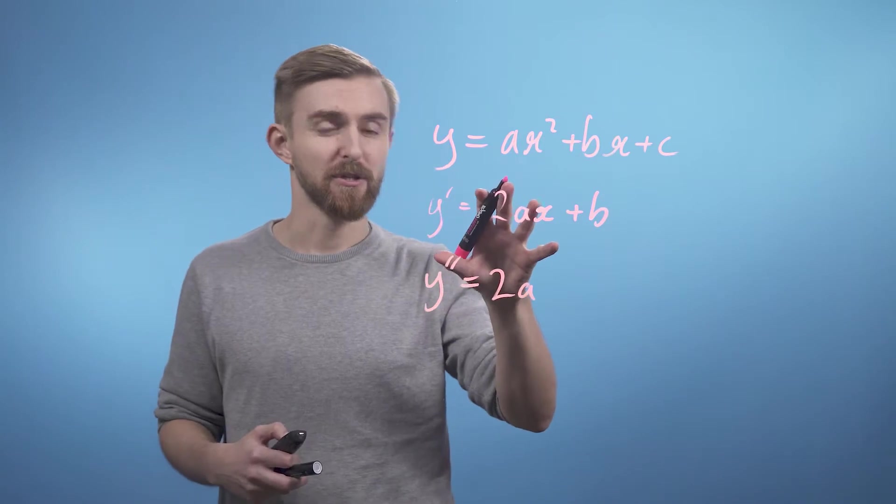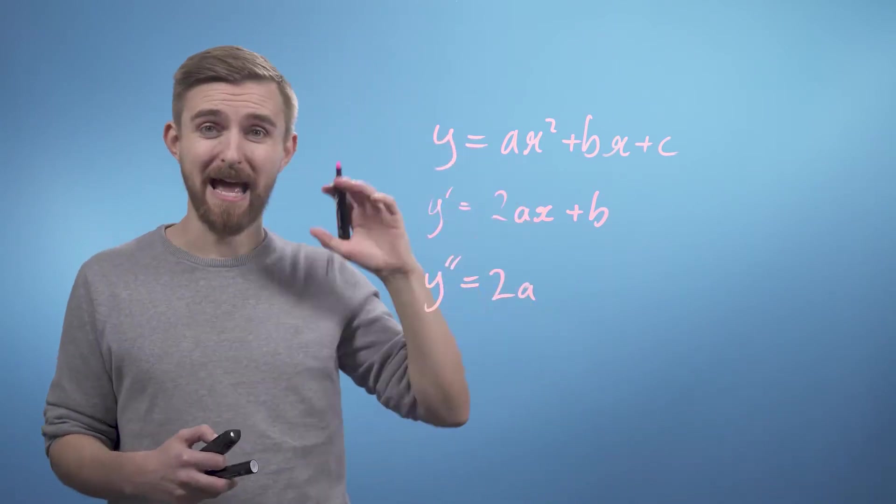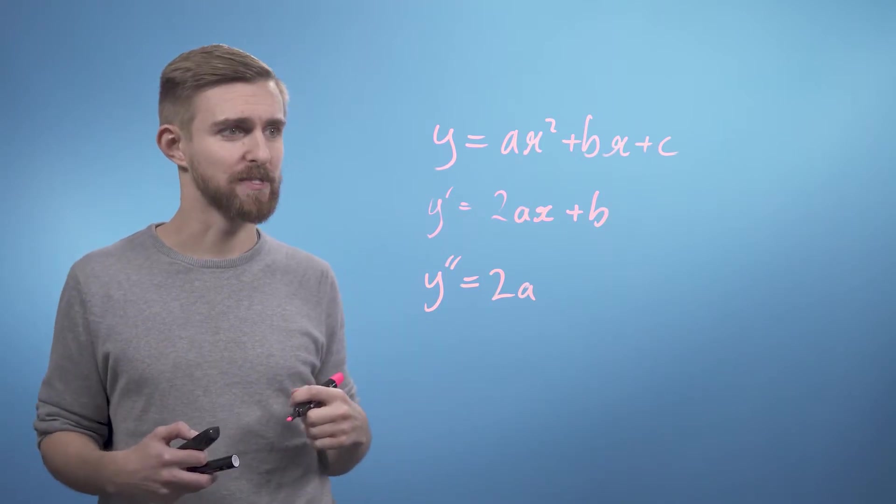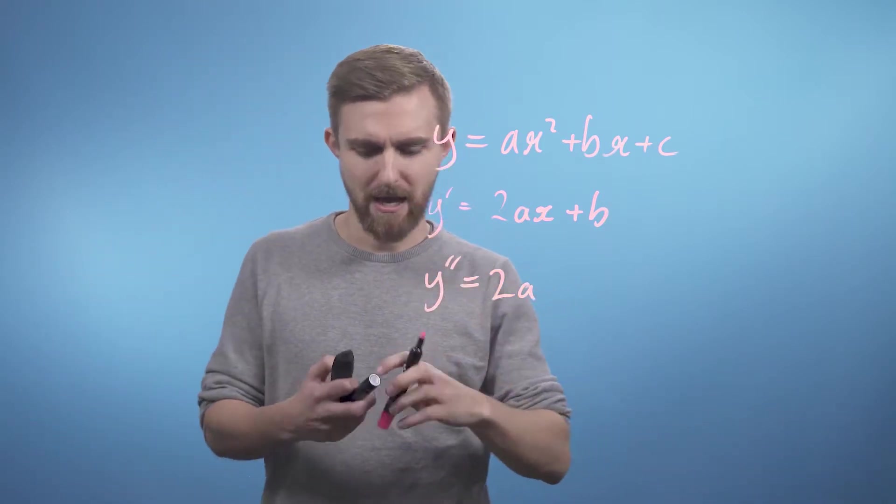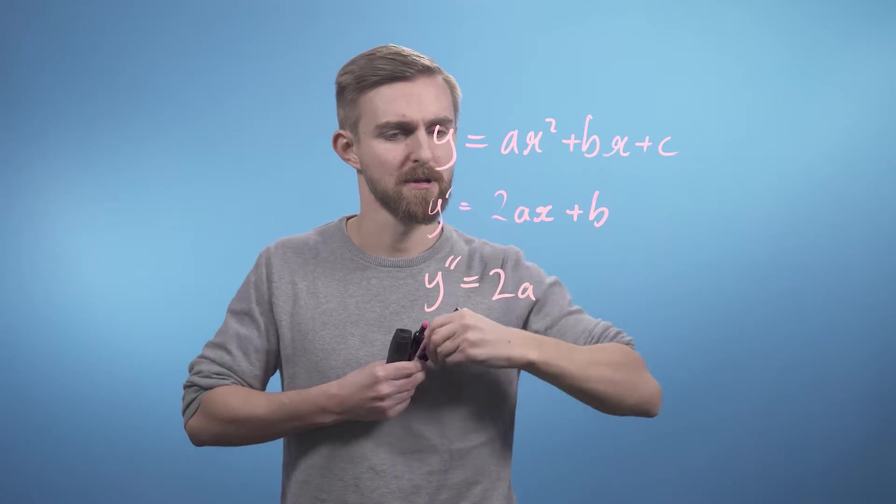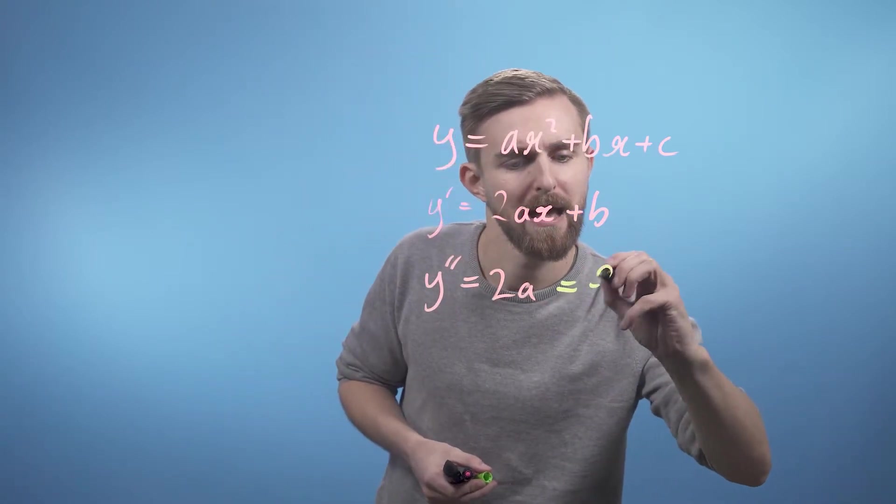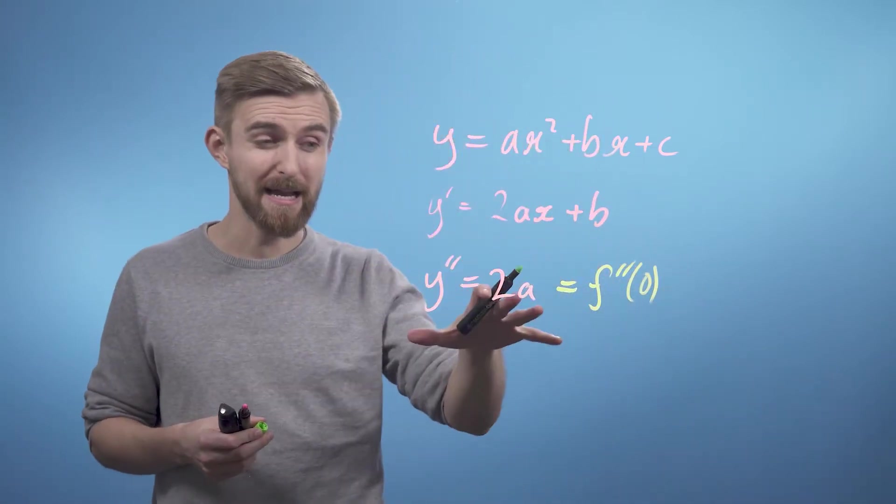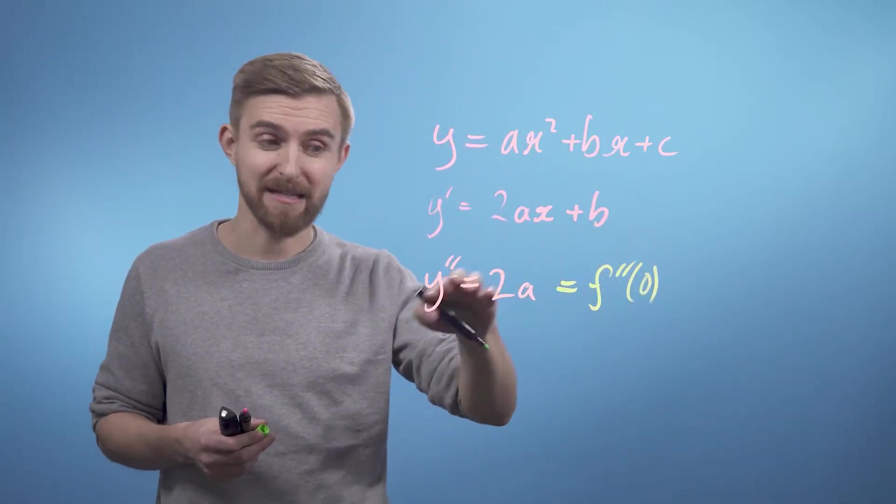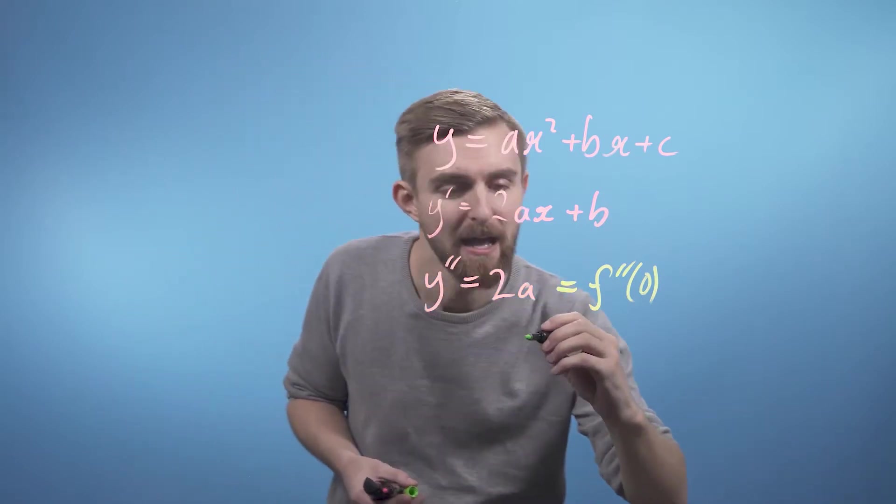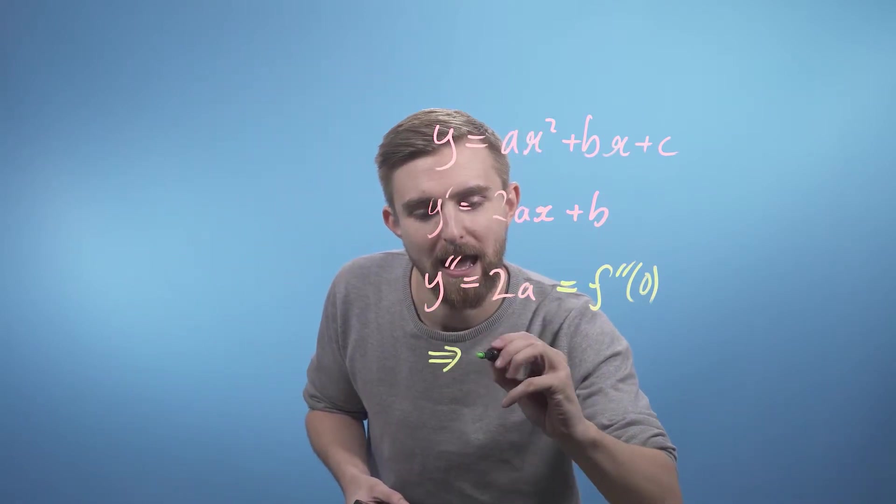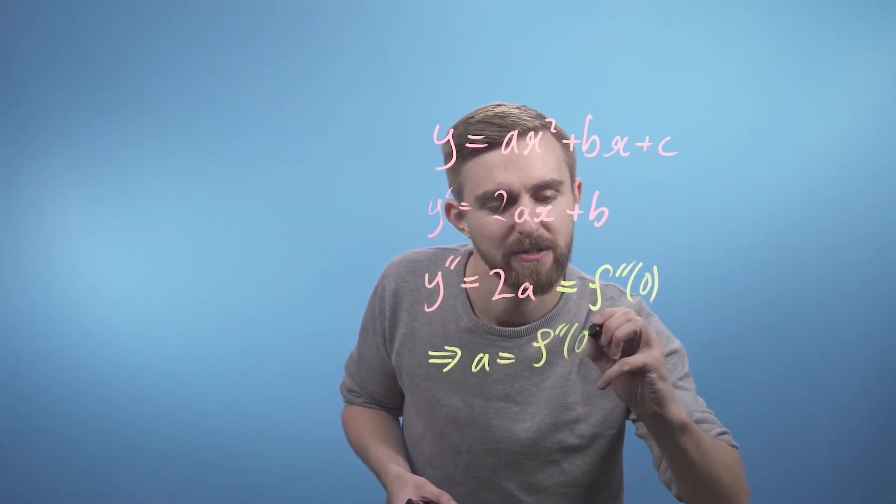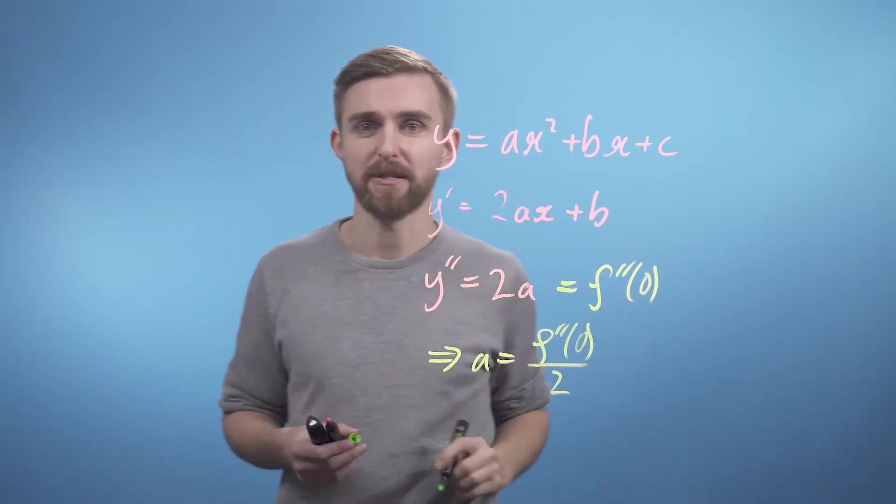Now, what we want is for this function to be the same as f of x when we sub it in at the point x equals 0. So we can say, okay, at x equals 0, we want this thing to equal f double prime of 0. So clearly, our coefficient a, because this thing's not even a function of x, therefore a is just going to equal f double dash 0 divided by 2.